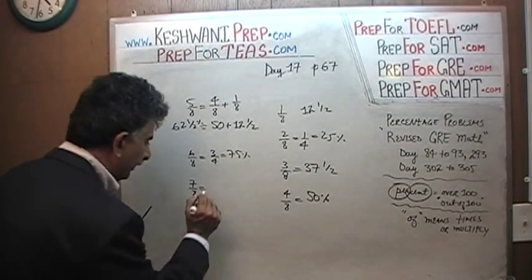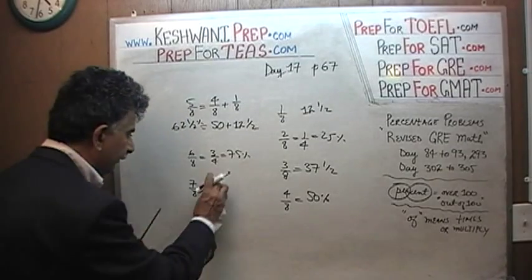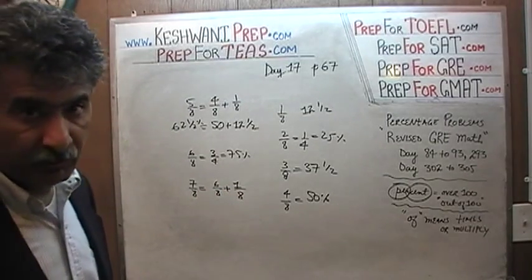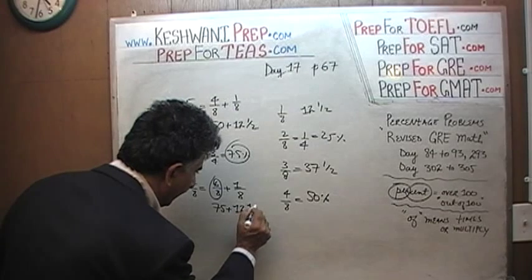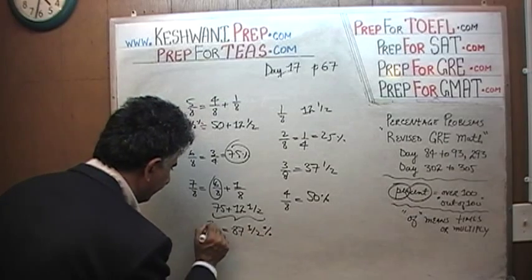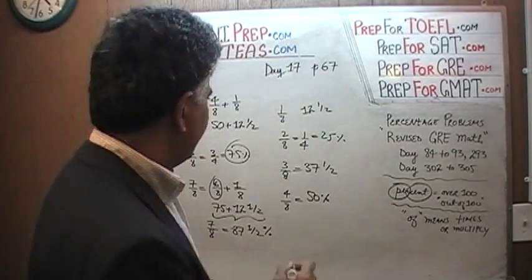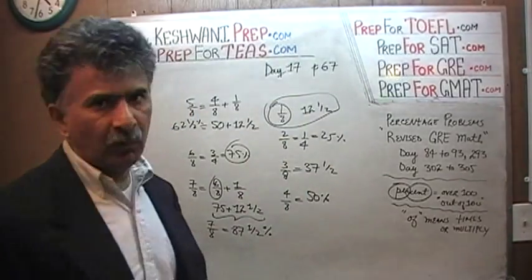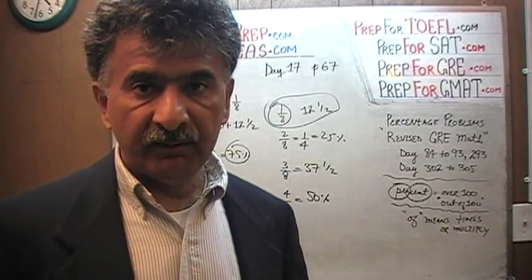Seven eighths — same trick. We take out three quarters, which is six eighths, and we add one eighth to it. Six eighths plus one eighth is going to be seven eighths, and six eighths we already know is 75%. So it's 75 plus 12.5%, which altogether gives us 87.5% — which is our seven eighths. There's no need to memorize. If you understand the concept, they come very easily. You just have to know the first one, which is not a big deal at all. Just realize that an eighth is half of a quarter, and a quarter of course is 25%. Half of 25 is 12.5%.